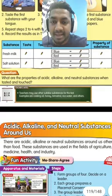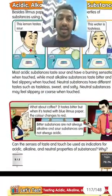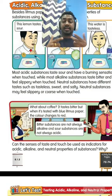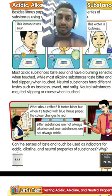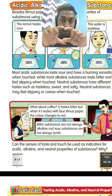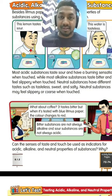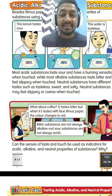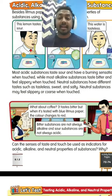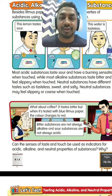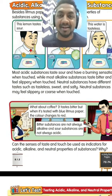Now let's do an activity. I've given you a few examples of acidic, alkaline, and neutral substances. In the comment box below, you can comment with any acidic, alkaline, or neutral substances that you know. I will check and correct your answers there.